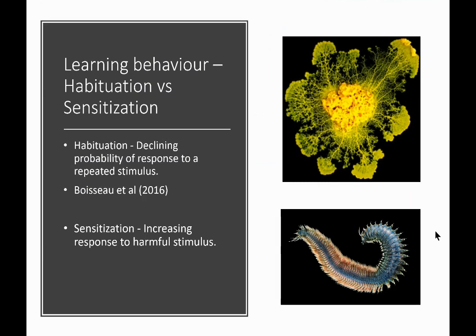Habituation and sensitization are non-associative behaviors. In habituation, we get a declining probability of a response to a repeated stimulus. Bozier and colleagues in 2016 did an interesting experiment with slime molds. They had a small bridge with the slime mold on one side and food on the other, with a bitter compound spread across the bridge. Although the bitter compound was not harmful, the slime mold was initially hesitant to cross. But after several days of repeated exposure, it learned to ignore the stimulus and grew straight across. This is habituation — a bit like living next to a train track and learning to ignore the trains.